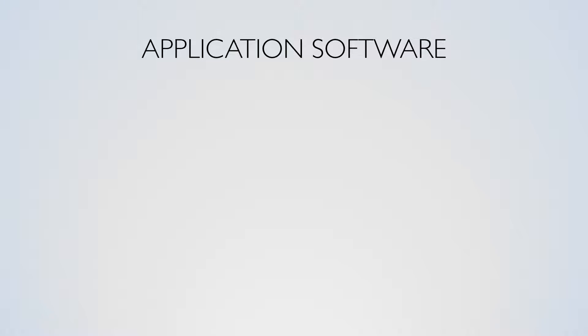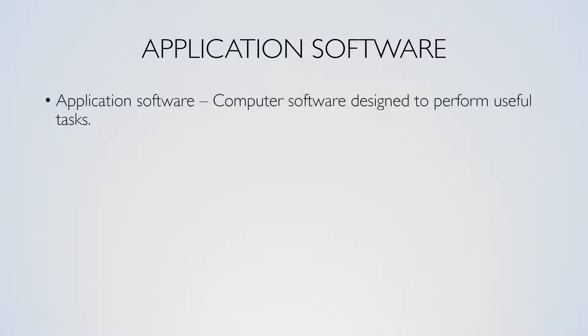Application software is computer software designed to perform useful tasks. Application software, commonly known as programs or applications, runs on top of the operating system, meaning that programs communicate with the processor and other hardware via the operating system and other system software.